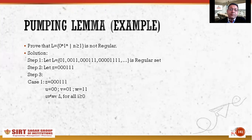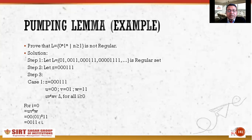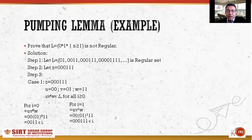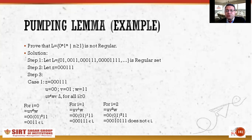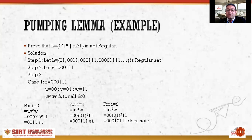Checking the expression u·v^i·w belongs to L: for i = 0 we get 0011, which belongs to L. For i = 1 we get 000111, which also satisfies the expression. But for i = 2, the middle portion 01 appears twice, giving a string like 000101 11, which does not appear in L.